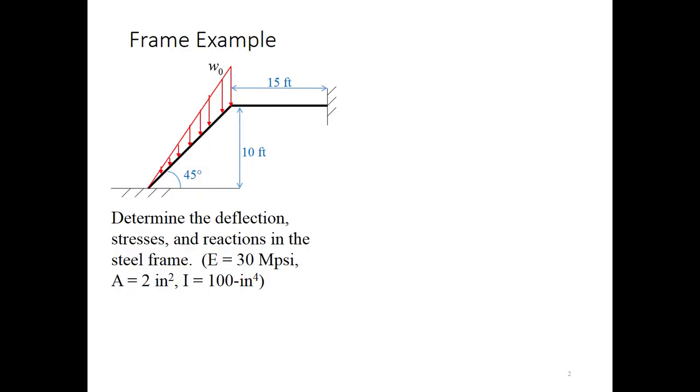This is the problem that we're going to be tackling. We've got a horizontal beam that's 15 feet long and an angled beam at 45 degrees that lifts up 10 feet above the ground. We have a distributed load applied to the angled beam and our goal is to find the deflection, stresses, and reactions present in this steel frame. We've got modulus E = 30 Mpsi, cross-sectional area A = 2 in², and moment of inertia I = 100 in⁴ for the two beams.